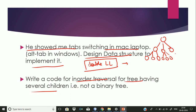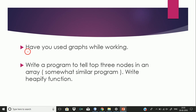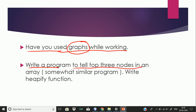He also asked me to write code for in-order traversal of a tree having several children — not a binary tree but one with multiple children. When I was working on it, he asked whether in-order traversal is possible for such a tree, and I said no. I think he gave this question in a hurry because in-order traversal of a tree with several children is not feasible. He then asked if I had used graphs while working, and then asked me to write a program to find the top three nodes in a stream.